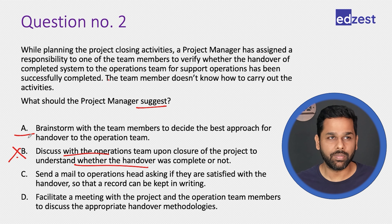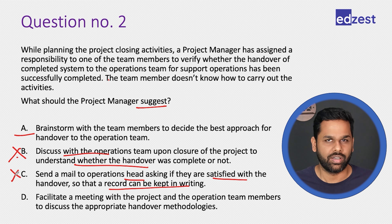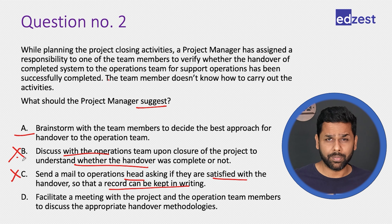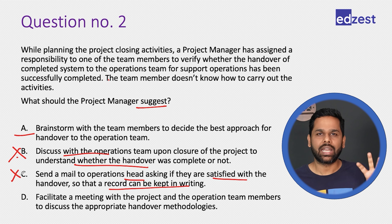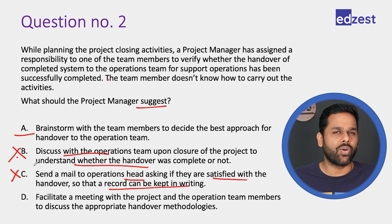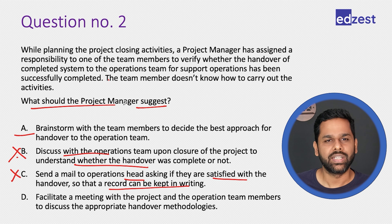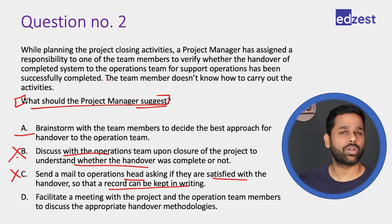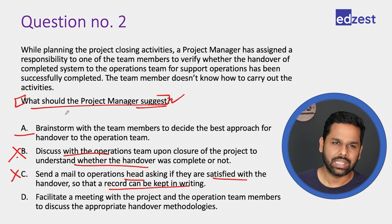Option A is where we are doing participatory decision making, a collective decision making — it is always better. Option C: send a mail to the operations head asking if they are satisfied with the handover so a record can be kept in writing. Again, the project manager is suggesting a direct solution. We do not know whether this is the best solution. Any option that says we will analyze, discuss, and then decide is typically better when there is a general question.